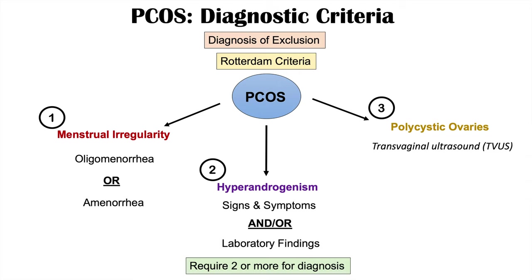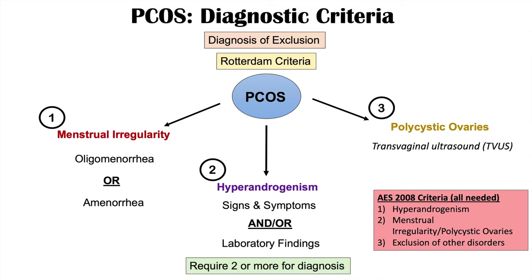There is also a diagnostic criteria from the Androgen Excess Society or AES. This requires all three criteria: signs and symptoms or laboratory findings of hyperandrogenism; menstrual irregularity or polycystic ovaries; and exclusion of all other disorders that might explain hyperandrogenism, menstrual irregularity, or polycystic ovaries. This is very similar to the Rotterdam criteria.